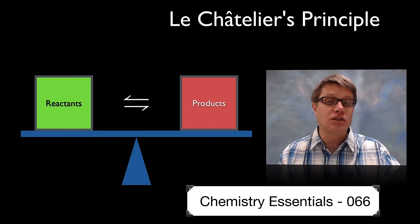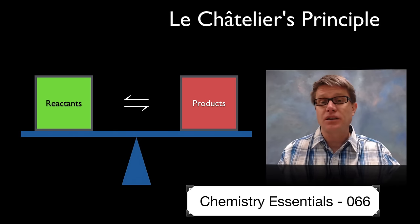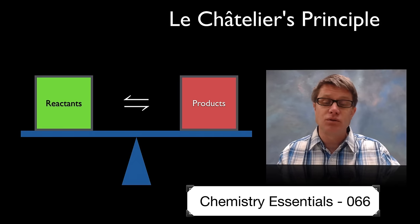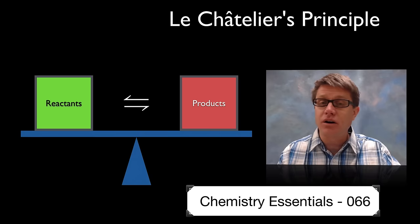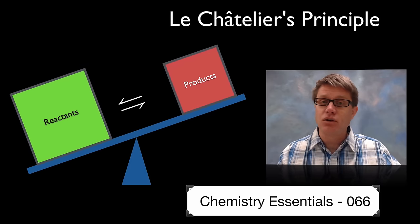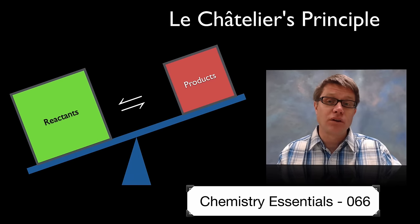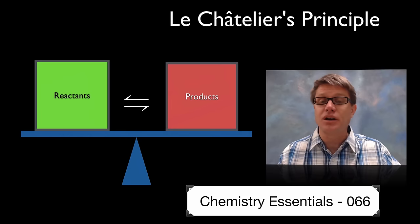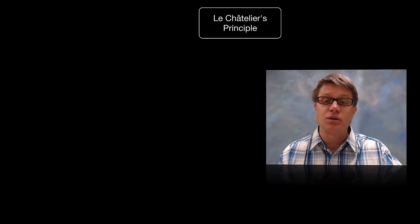It basically says if there is ever a disturbance to equilibrium, the reaction will move to counteract that disturbance. For example, if I'm at an equilibrium state between reactants and products and I suddenly get an influx of reactants — way more reactants — it's going to throw my equilibrium out. Since this is a reversible reaction I can move the reaction from left to right according to Le Chatelier's principle, increasing the amount of products and bringing it back into balance. That's essentially Le Chatelier's principle.